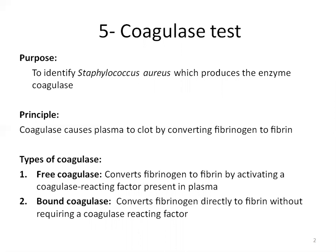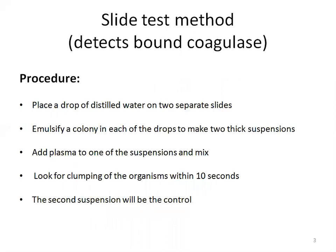Bound coagulase converts fibrinogen directly to fibrin without requiring a coagulase-reacting factor. It can be detected by the clumping of bacterial cells in the rapid slide test. To perform this experiment, EDTA anticoagulated plasma — from human or rabbit — can be taken. The plasma should be allowed to warm to room temperature before being used.